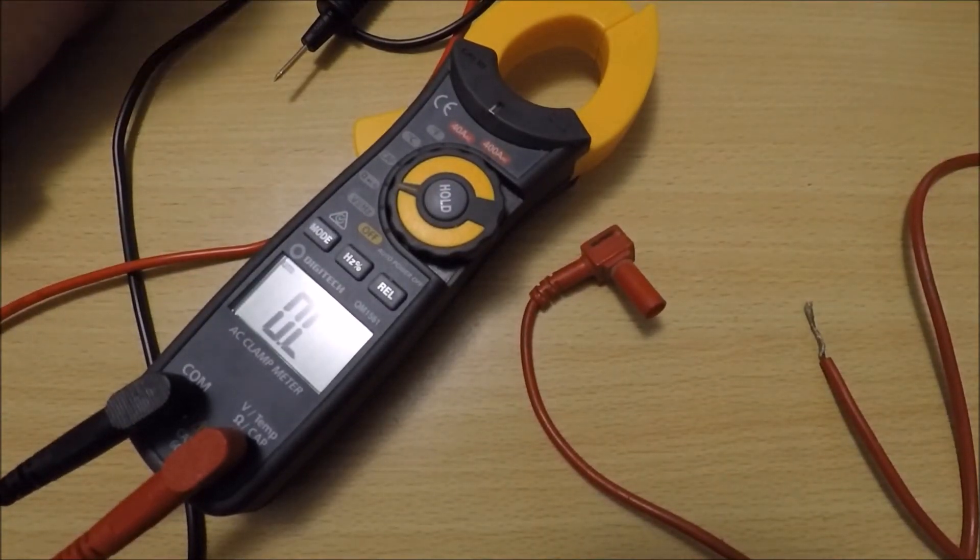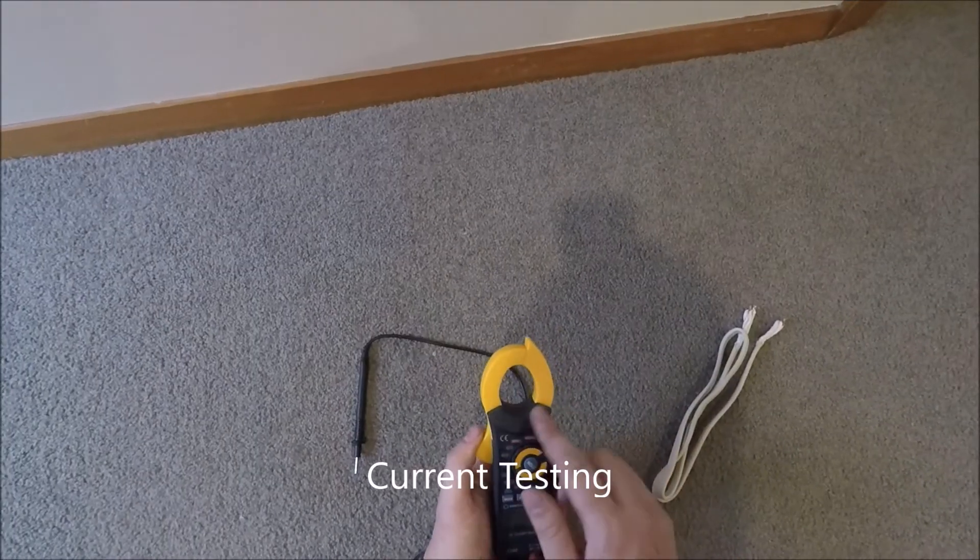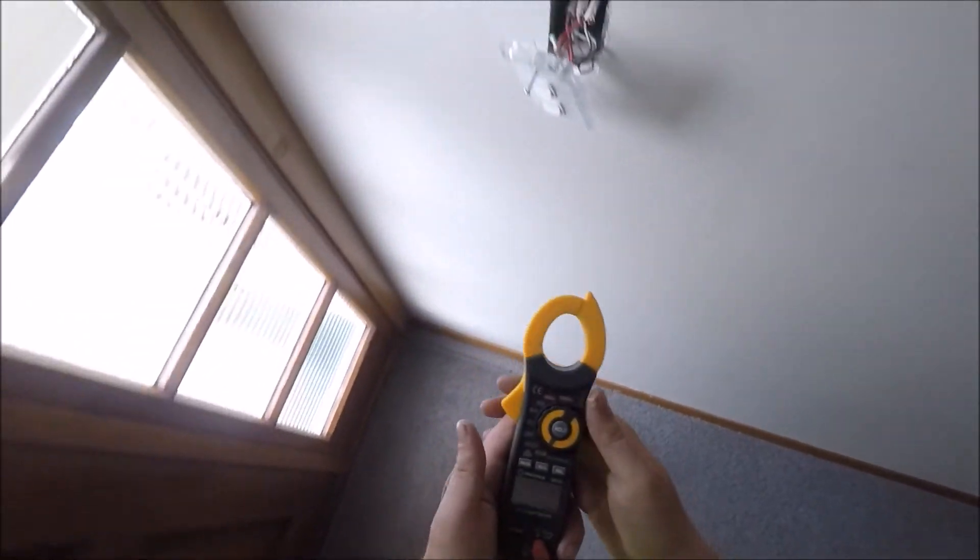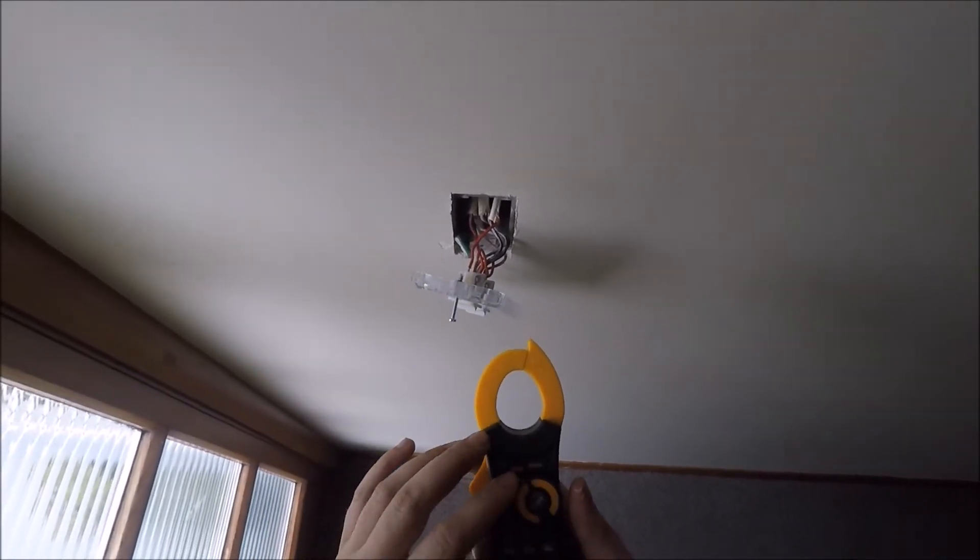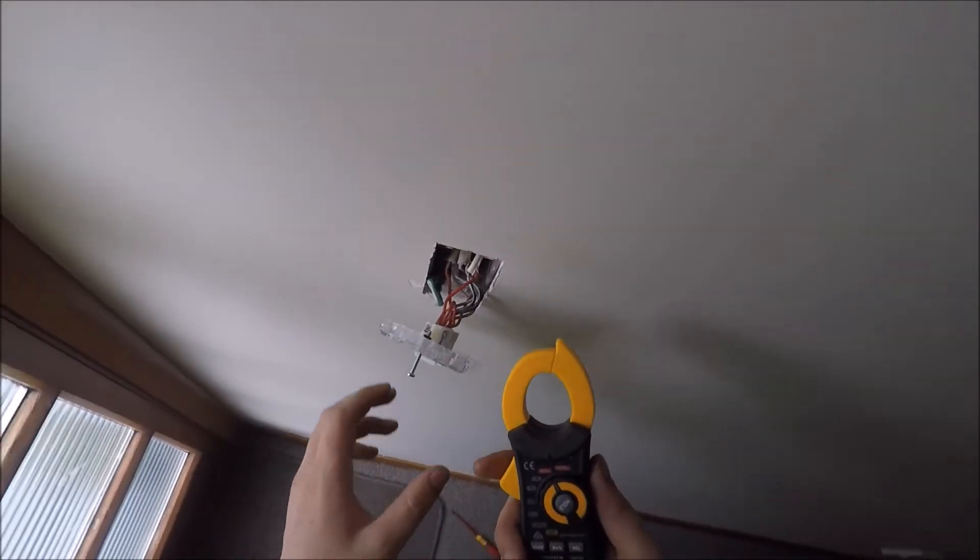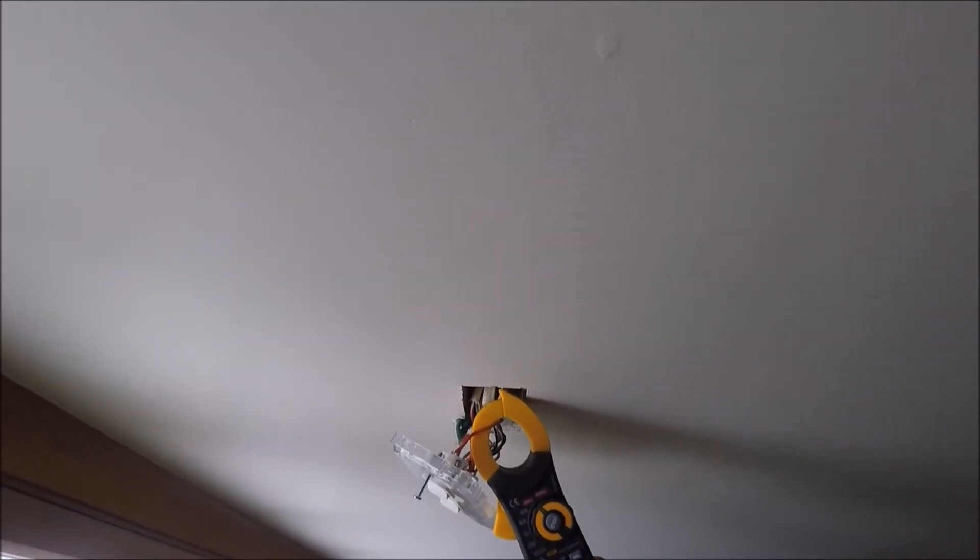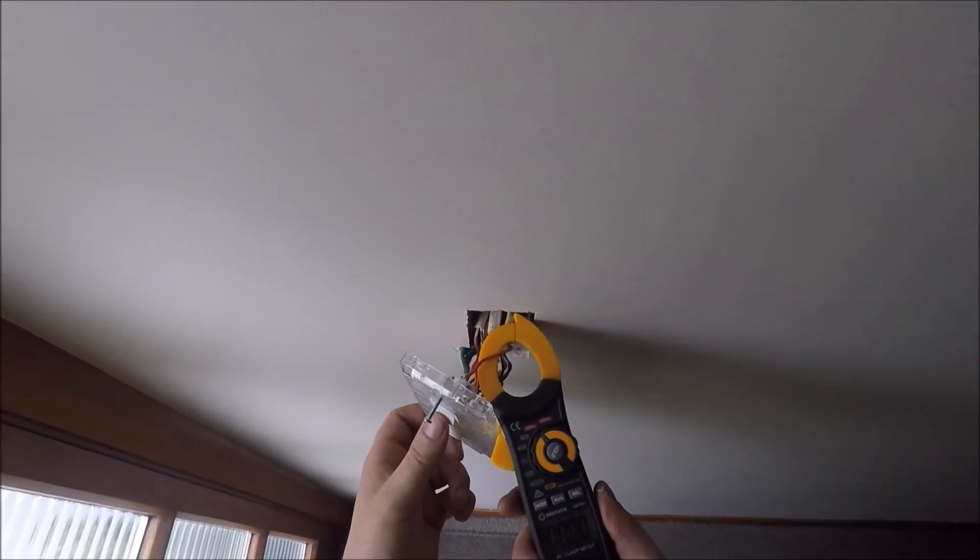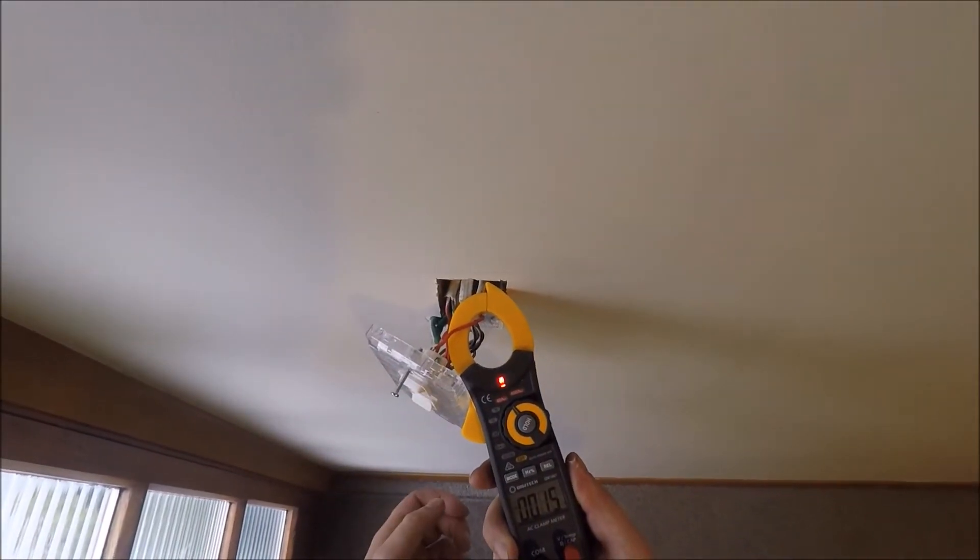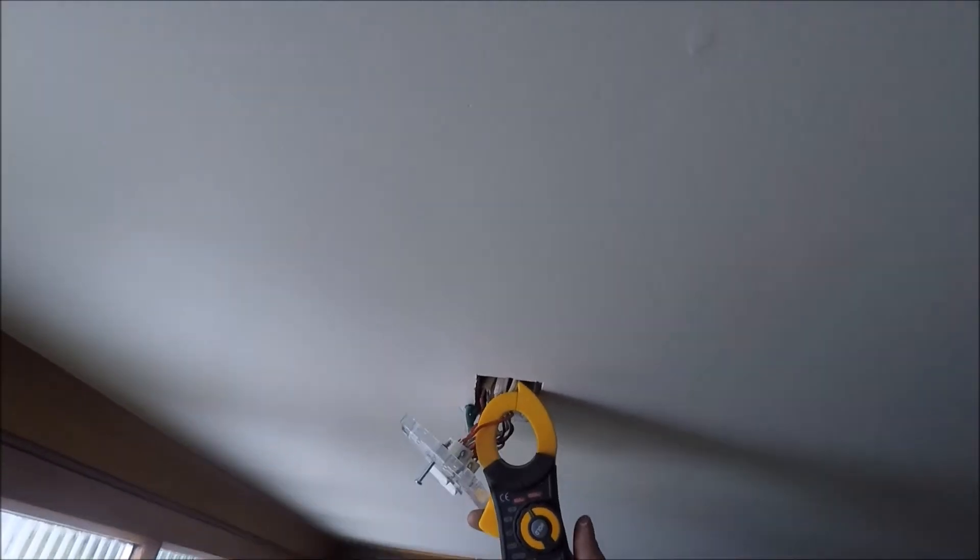I'm going to go through current now. I've turned the lights off so I hope you can see this. Since we're drawing low current, we're going to put it on the 40 amps AC rating and we're going to hook it around one of these cables that we want to make sure our load is drawing current. So we can flick the switch on and it comes up with 0.15 amps. So we can tell that this circuit is working because it's drawing current.